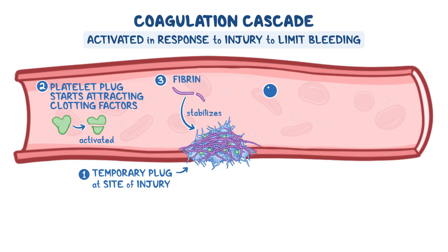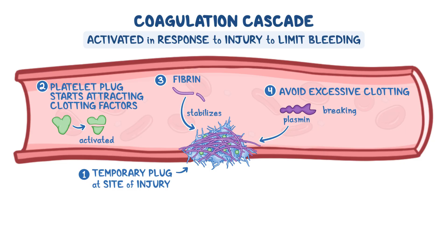Lastly, in order to avoid excessive clotting, a protein called plasmin balances off the clotting process by breaking down the fibrin mesh and ultimately dissolving the clot through a process called fibrinolysis.